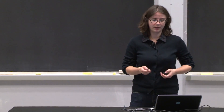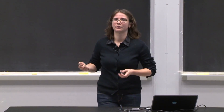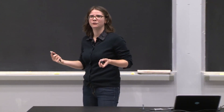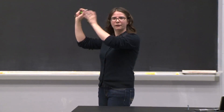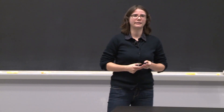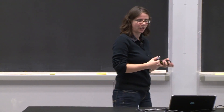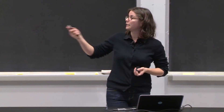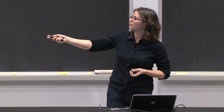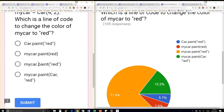The first one, car.paint red, is sort of attempting to do the way that we saw on the right in the slides, where you're calling the class name dot, but it's missing the self. So we don't know what object to call it on. So that one's out of the running.